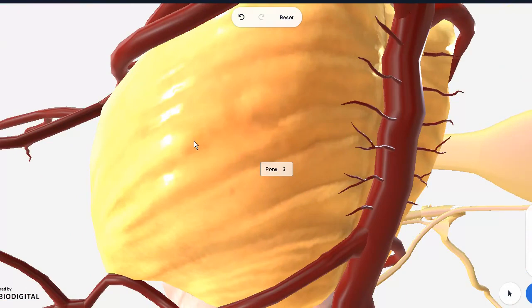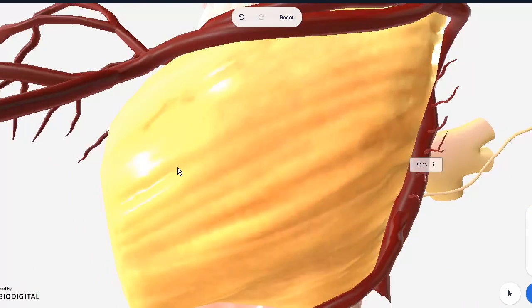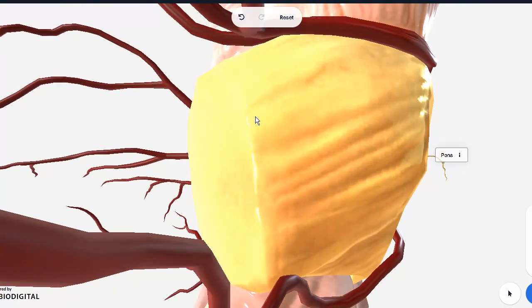These are actually the transverse fibers. As they go back from the front, they actually form the middle cerebellar peduncle. This is the connection between the pons and the cerebellum. The spinocerebellar fibers, as well as the cuneocerebellar, they actually pass through these into the cerebellum.